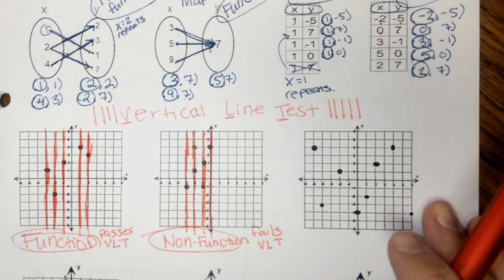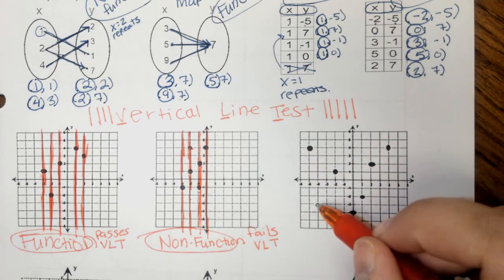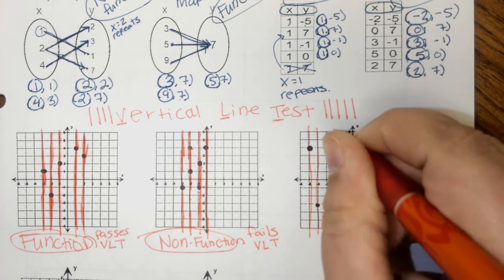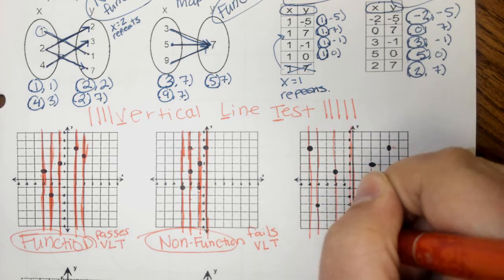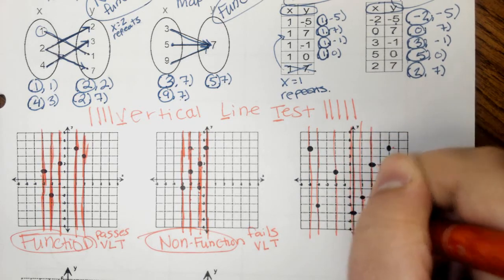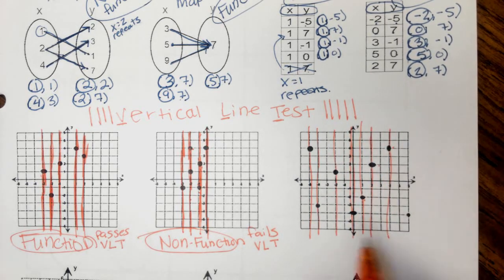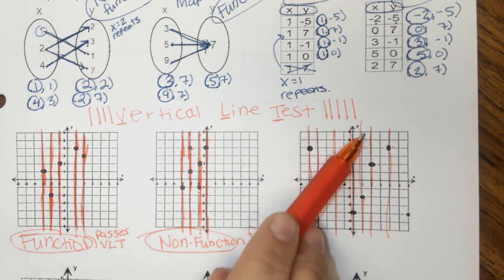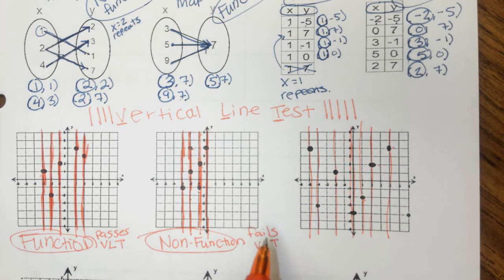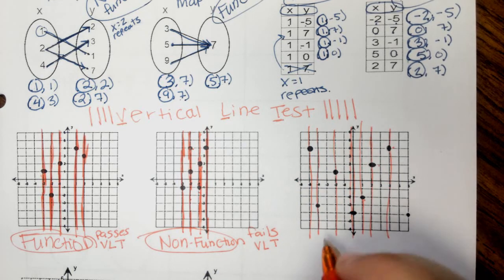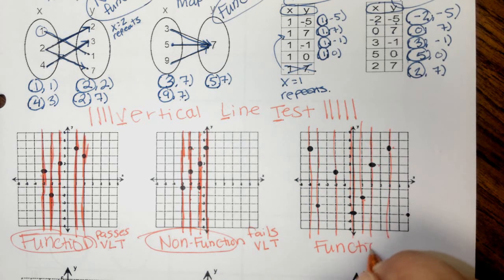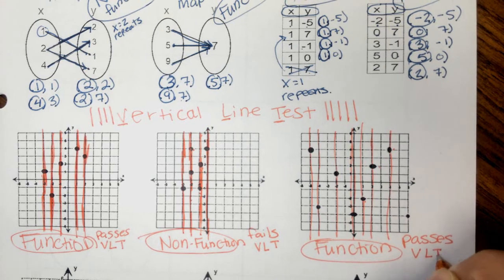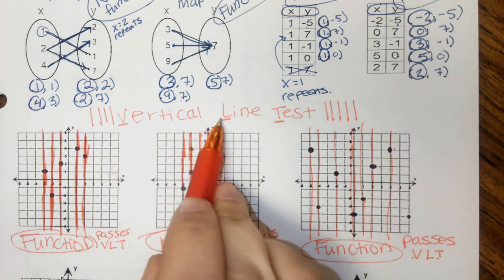Looking at the last graph of ordered pairs, draw vertical lines through each of the ordered pairs on the graph. You'll see that each vertical line only has one ordered pair going through it, which means this does pass the vertical line test. Since it passes the VLT, this is a function.